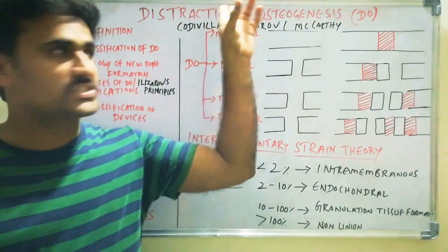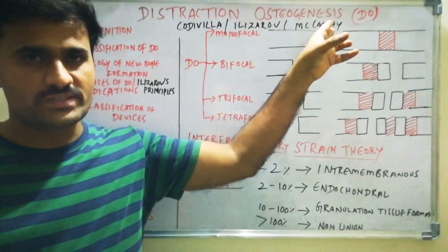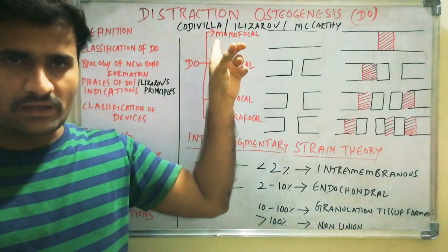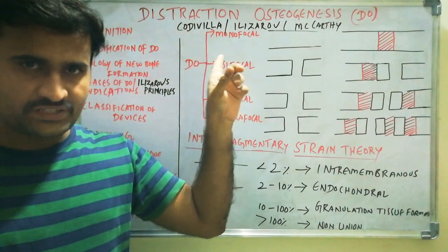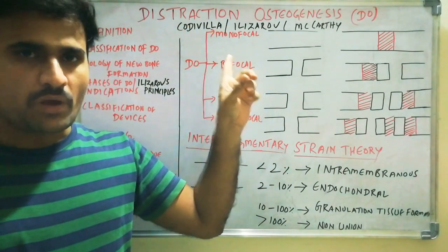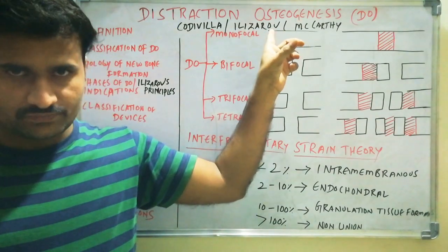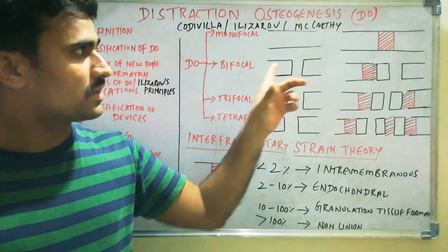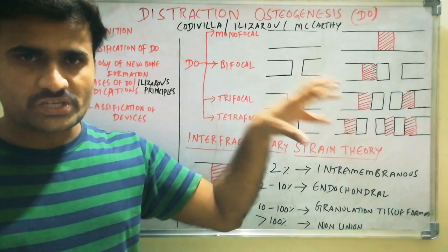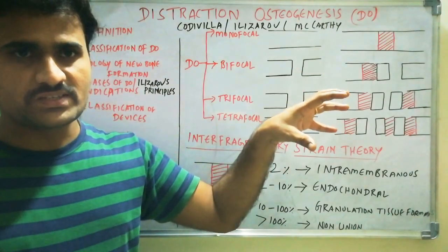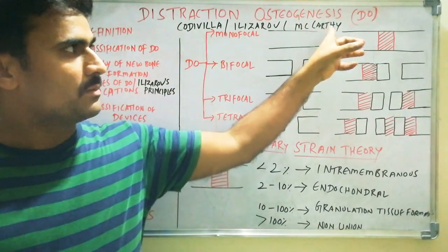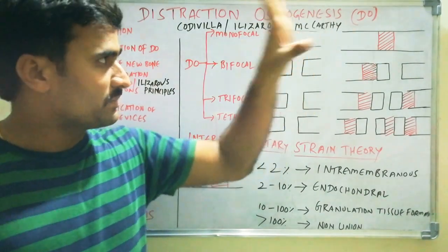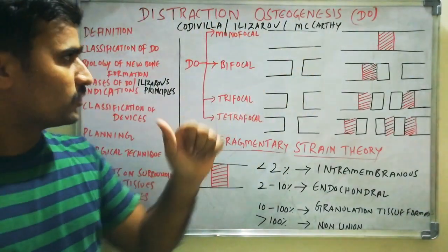In this video we will discuss distraction osteogenesis (DO). It was first reported by Corvilla in orthopedic practice, but it is popularized by Ilizarov. He gave Ilizarov's principles, which are very important in this topic. In craniofacial distraction osteogenesis, it was first used by McCarthy.